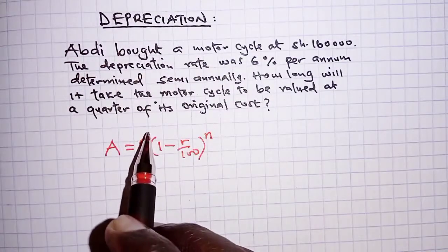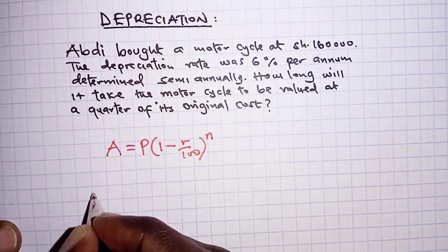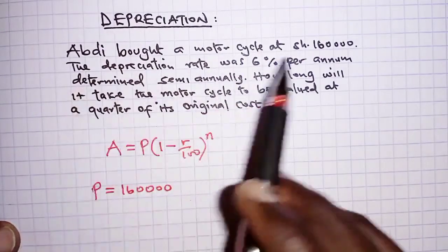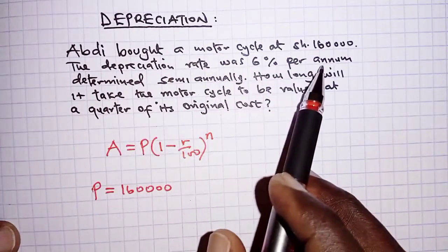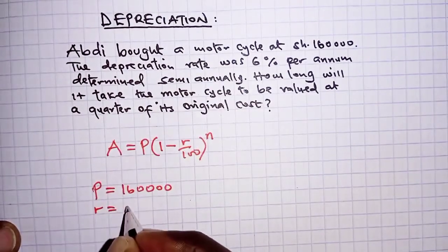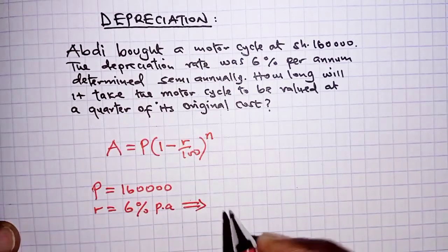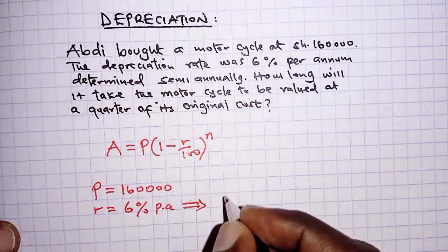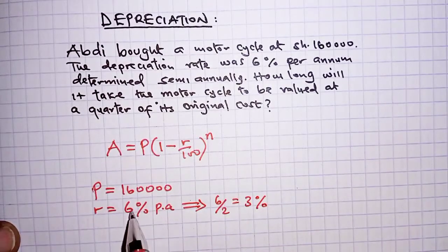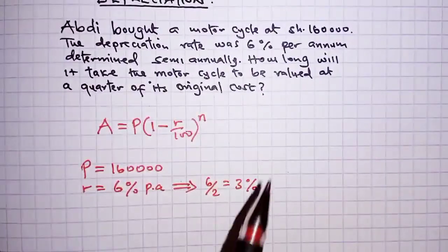In the question we are told Abdi bought a motorcycle at 160,000 shillings, so that is the original cost. The original cost represents the principal, that is 160,000. This value has to depreciate at a rate of six percent per annum, but we are told this is determined semi-annually. So the rate r is six percent per annum, and dividing by two gives us three percent — because for the whole year the rate is six percent, so half a year is just three percent.